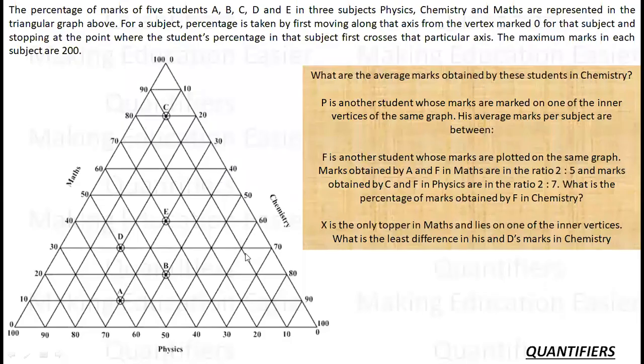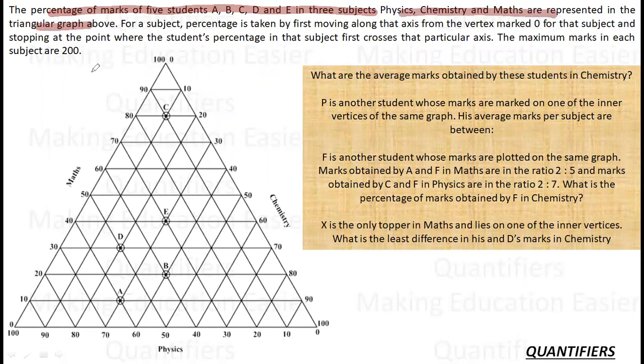Let's move towards the set. So let's see what the set is all about. They say that percentage of 5 students A, B, C, D and E in 3 subjects Physics, Chemistry and Math are represented in the triangular graph above. So here the percentage is given. For a subject, percentage is taken by first moving along the axis from the vertex marked 0 for that subject and stopping at the point where the student's percentage in that subject first crosses that particular axis. So this is a tricky part or this is a point we need to understand.